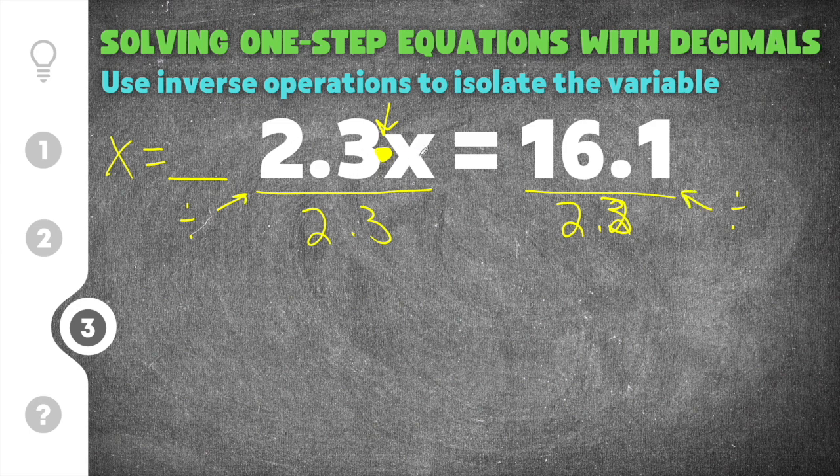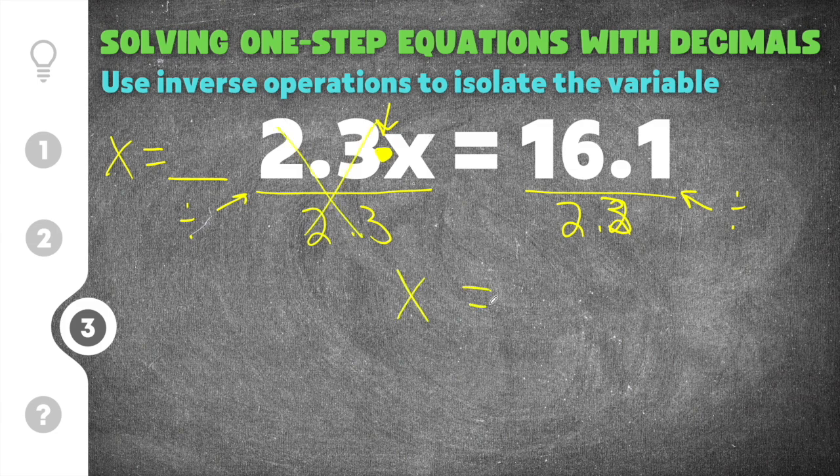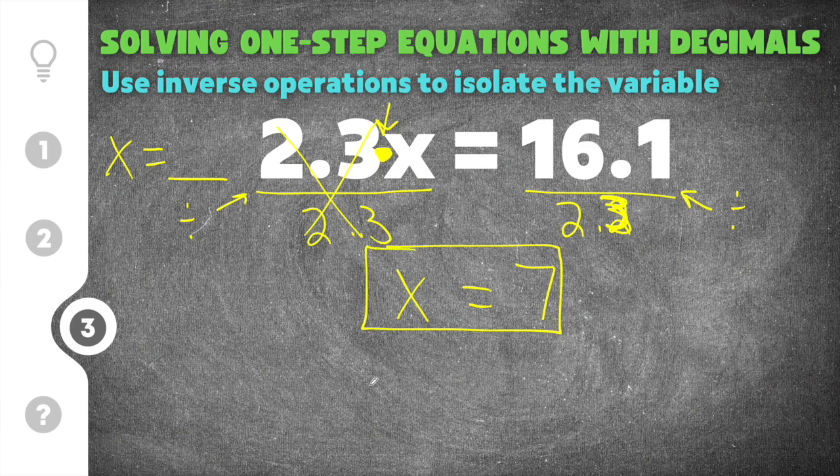Now 2.3 times x divided by 2.3. Well, that's going to cancel the 2.3s. And we're going to be left with just x on this side. And then on this side, we're going to do 16.1 divided by 2.3. And that's going to give us 7. After you simplify, you will get x equals 7.